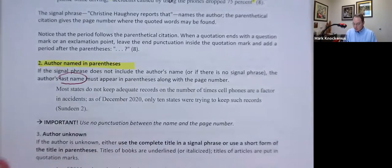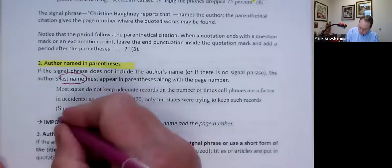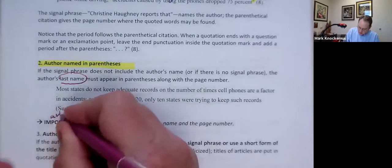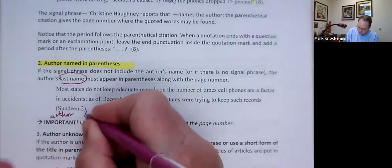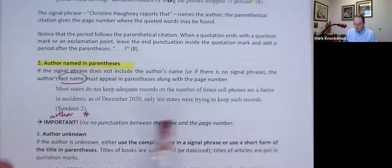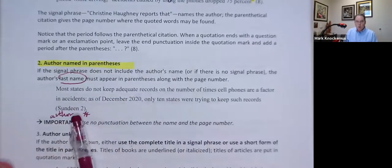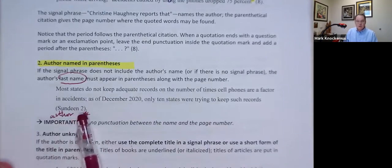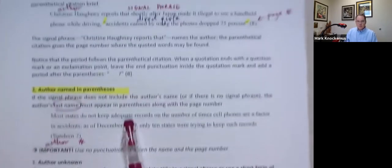most states do not keep adequate records on the number of times cell phones are a factor in accidents. As of December 2020, only 10 states were trying to keep such records. Sundeen two. So that's the author. Remember, just the last name. And then the page number. Notice, there's no comma. There's no abbreviation of page. It's just a space.